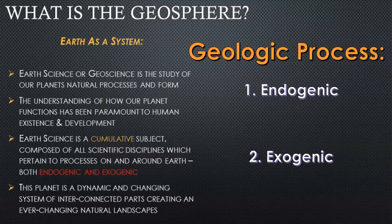As discussed in previous videos, the earth is a very large interconnected system of different components and sections working together concurrently to form our living planet. That goes for everything to do with the atmosphere and the sun's radiation energy, how we use the energy within our planet, and how the earth was formed and constructed.